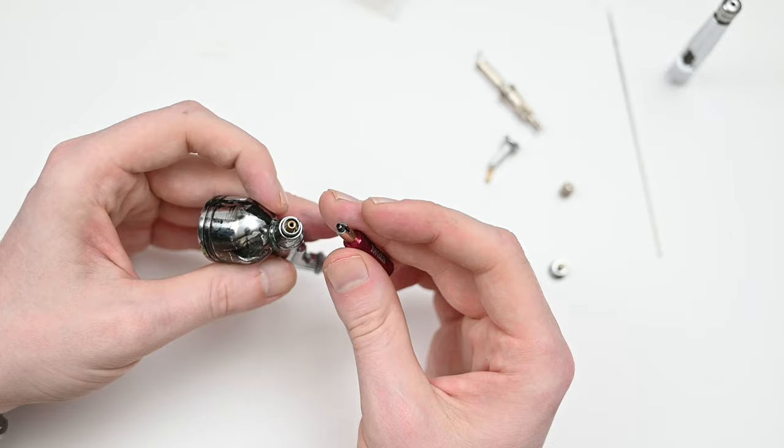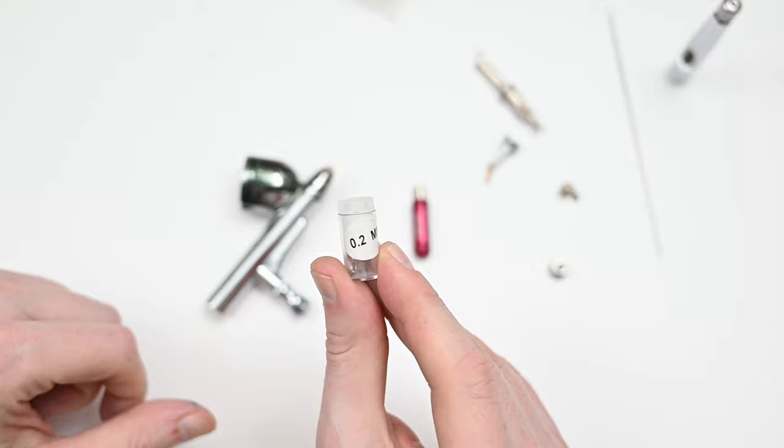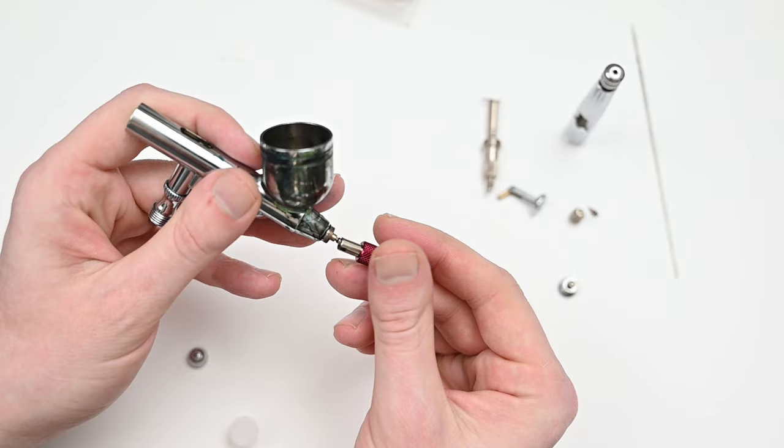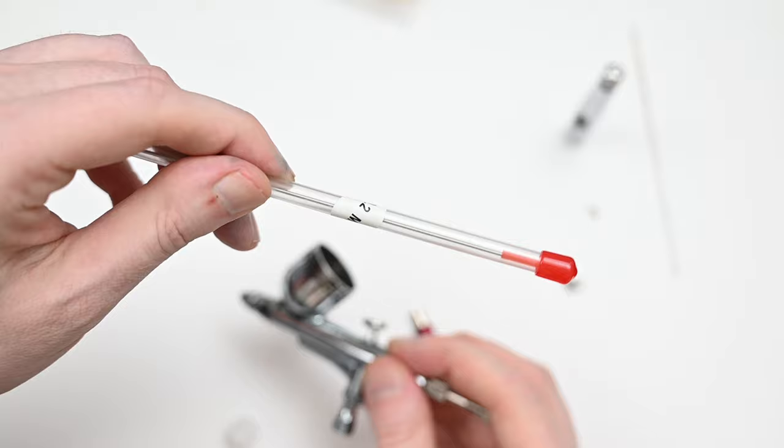So for this review, I'm removing this 0.3 millimeter nozzle, and I'm swapping it out with the 0.2. If you do this on your airbrush, make sure that you also swap out the needle to the correct one. Since I'm placing on the 0.2 millimeter nozzle here, I'm also going to have to use the 0.2 millimeter needle. You never want to mix and match these.